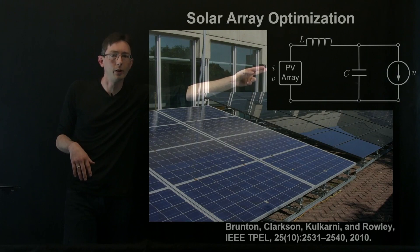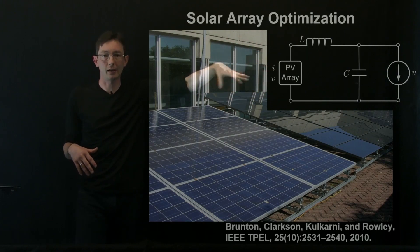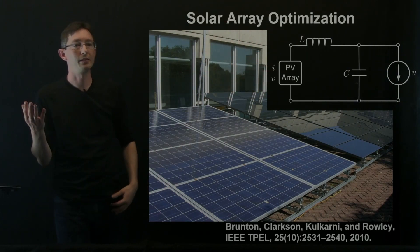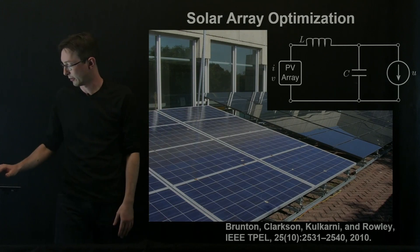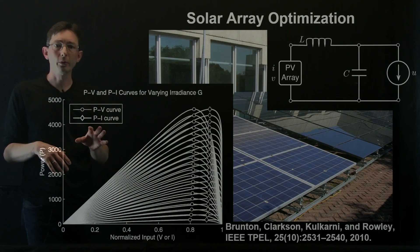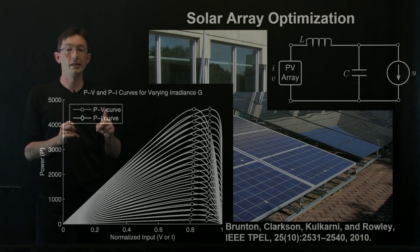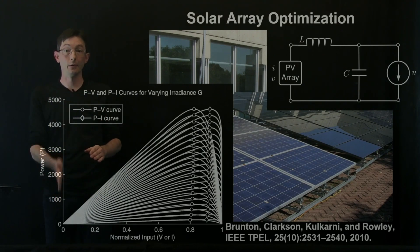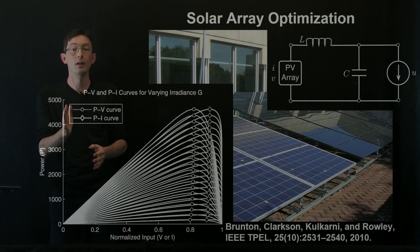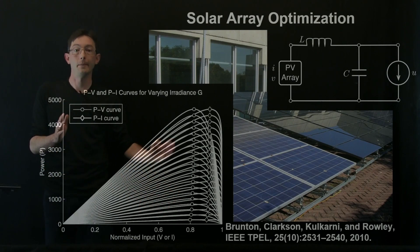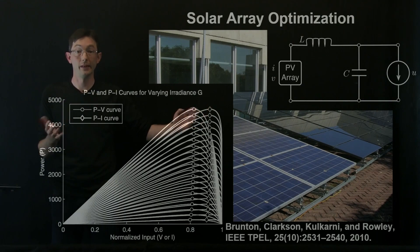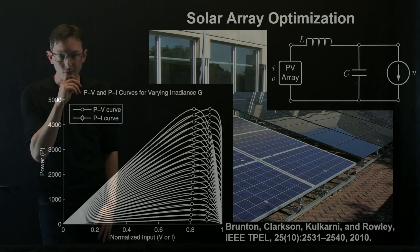So you can model your array using this basic diagram here. There's some capacitance, some inductance, and so on and so forth. And what you're really trying to do, so these are the power versus voltage and power versus current curves. You want to maximize the power. That's what you're feeding into the grid. You want to maximize the power by setting V or I to be at this peak, this optimizing value.